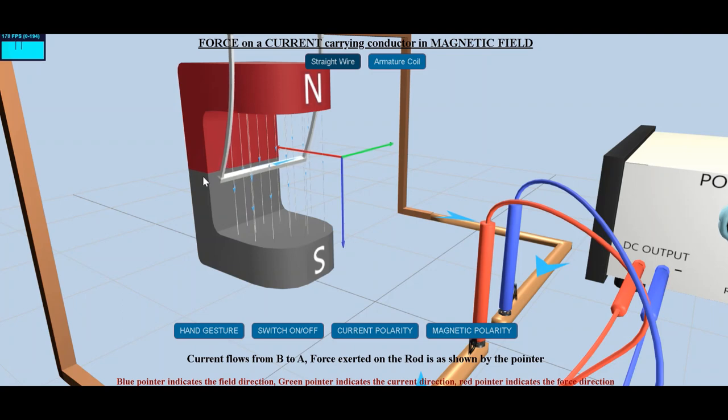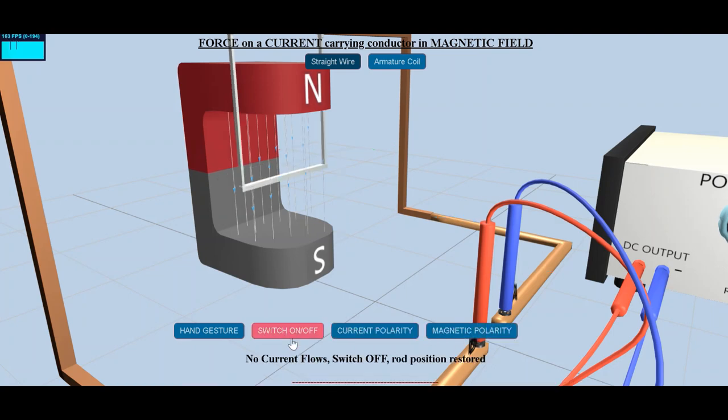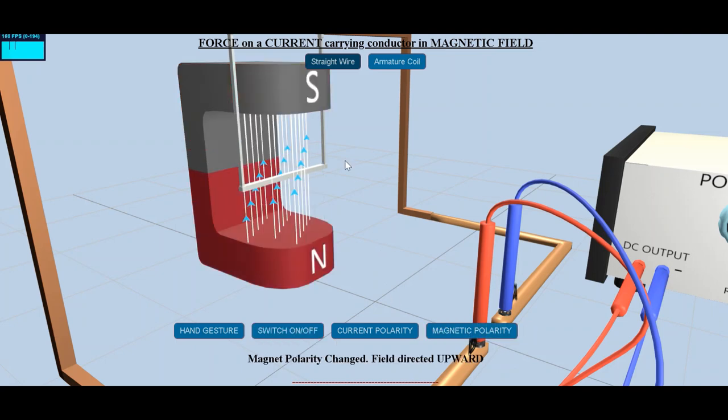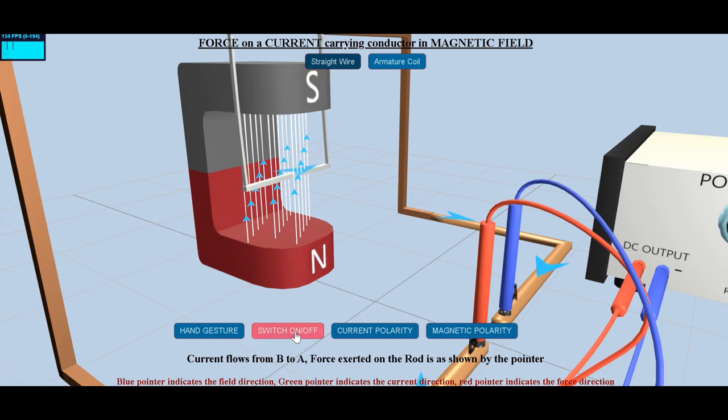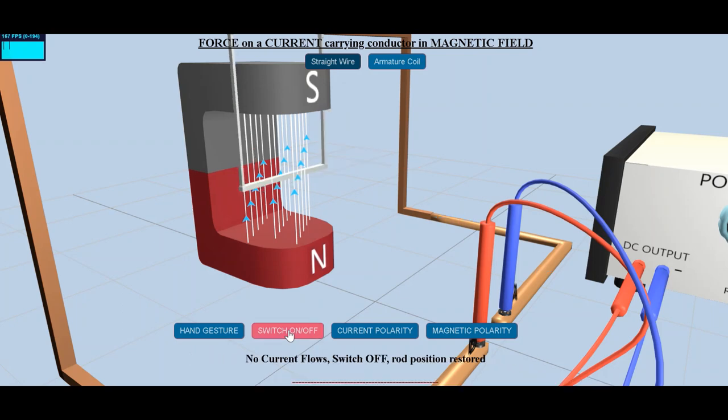The three mutually perpendicular pointers you see here show that the force on the conductor acts at a 90 degree angle to the magnetic field and the current direction. Blue pointer indicates the magnetic field direction, green pointer indicates the current direction, and the red pointer indicates the direction of force.